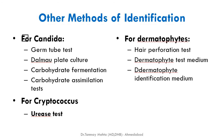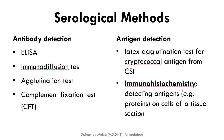Additional identification methods depend on colony type. For Candida, specific tests include germ tube test, Dalmau plate culture, carbohydrate fermentation, and assimilation tests — to be discussed with individual fungi. For Cryptococcus, the urease test is used as it is urease-positive. For dermatophytes, the hair perforation test and dermatophyte test medium are used, which changes color based on which dermatophyte is growing.